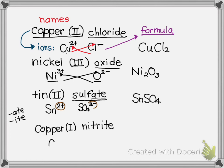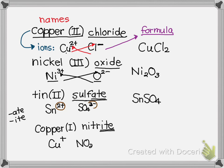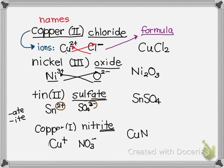Copper(I) nitrite: copper(I) is Cu⁺. Nitrite ends in -ite, telling us it's a polyatomic ion. Nitrite is NO₂⁻. With a 1+ and a 1−, you need one of each. So the formula is CuNO₂.